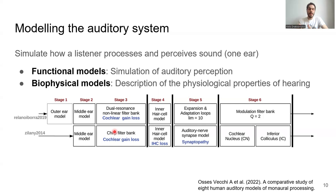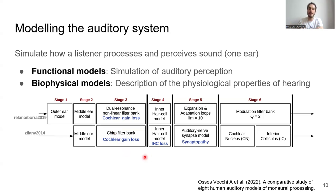There are also more complex descriptions of auditory processing, such as biophysically inspired models. A good example is the model by Zilany et al., which has been widely used across academia and industry. These kinds of models try to describe in detail the physiological properties of our auditory system and how hearing loss can be introduced separately in all the different stages of auditory processing, namely the cochlea, inner hair cells, and auditory nerve. Alejandro has done a good attempt at describing all these different models and their different purposes in the study mentioned here.